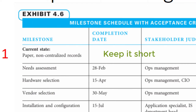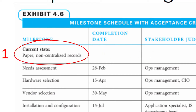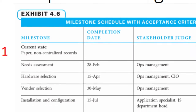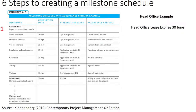Here are two examples. The organisation's records are paper-based and decentralised. The organisation's current head office lease expires in six months and a new head office premises needs to be secured and move-in ready.